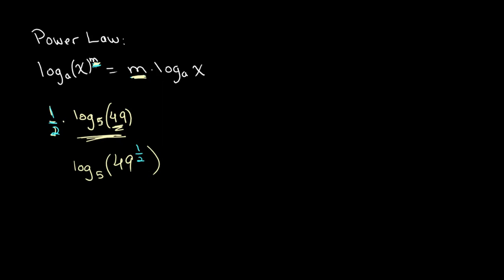And we know that 49 to the power of 1 over 2 is the same thing as the square root of 49. So we get the square root of 49, which is equal to log base 5 of 7. And this is our simplified answer.